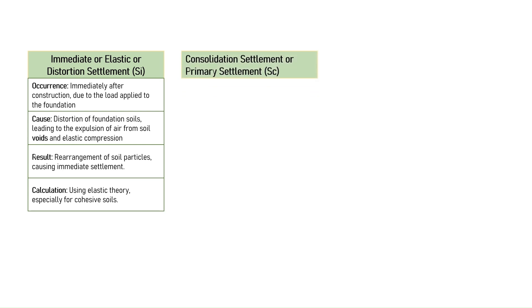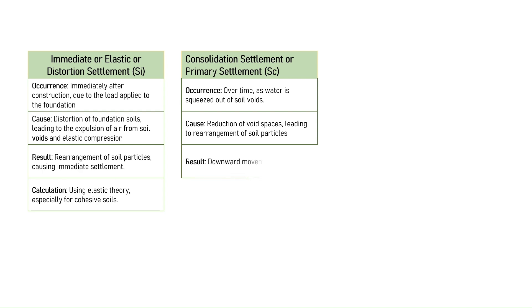Number two is consolidation settlement or primary settlement, SC. Consolidation settlement occurs when the water present in the soil gets squeezed out over time. The process reduces the void spaces that rearranges the soil particles. This makes the soil move downwards. It is determined using Terzaghi's theory of consolidation.